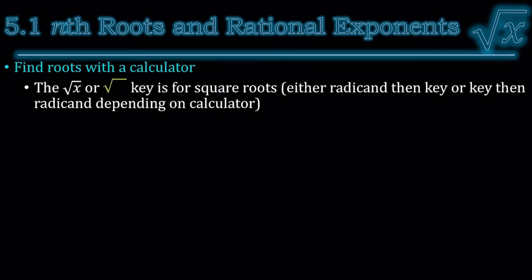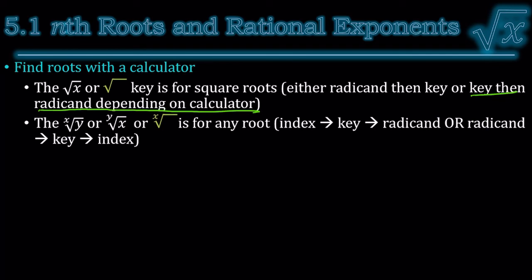So how do we use the calculator? The square root x, or just square root key, is for the square roots. And depending on your calculator, you're going to either hit the radicand first, and then the square root key, or the key, and then the radicand, depending on your calculator. Most calculators are going towards the second way. And then there's 3 options for all the other roots. The one that's colored is the most common. And usually you have to put in the index, and then that button, and then the radicand. It's usually, sometimes it's the other way around. So you'll have to try it with your own calculator to see.